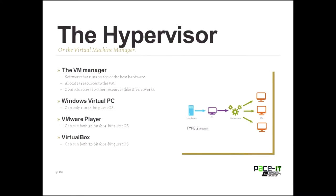Now let's move on to one of the critical pieces for virtualization: the hypervisor. The hypervisor is the virtual machine manager — it is the software that runs on top of the host hardware. We are talking about Type 2 virtual machines tonight. The hypervisor is what actually allocates resources to the virtual machine and controls access to other resources like your network interface card.